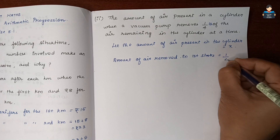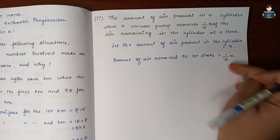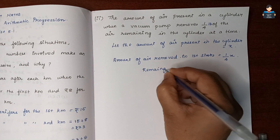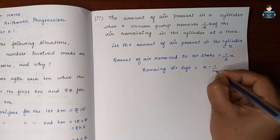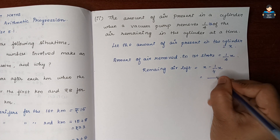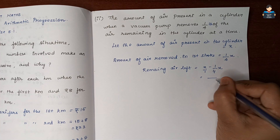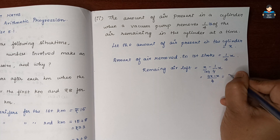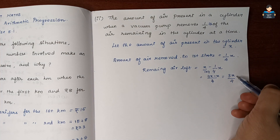After the first stroke, one-fourth of x is removed. So remaining air is x minus one-fourth of x. Taking LCM: 4x minus x over 4, which gives 3x by 4. So remaining air after first stroke equals 3x by 4.